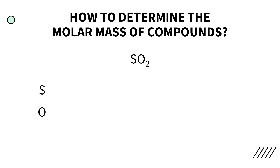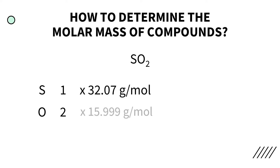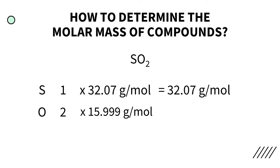Afterwards, we determine how many atoms of each element are in the compound. There is one atom of sulfur and two atoms of oxygen. Then we multiply them by their respective molar masses. Sulfur has a molar mass of 32.07 grams per mole, while oxygen has a molar mass of 15.999 grams per mole. So for sulfur we get 32.07 grams per mole, and for oxygen we get 31.998 grams per mole.